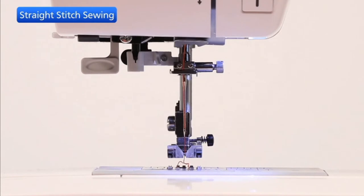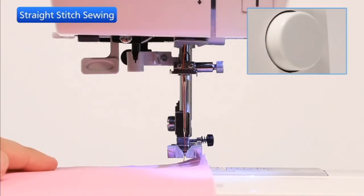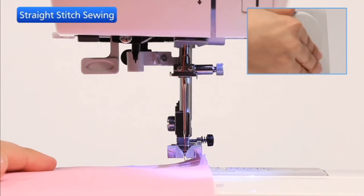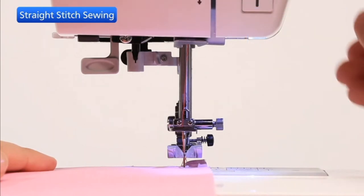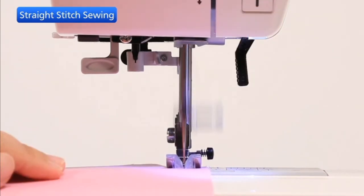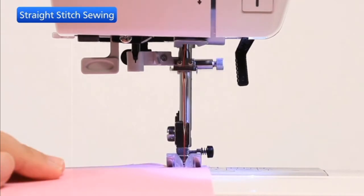Raise the presser foot and position the fabric next to a seam guide line on the needle plate. Turn the handwheel towards you to lower the needle to a starting position. Pull the threads toward the rear and lower the presser foot. Depress the foot control to start sewing.